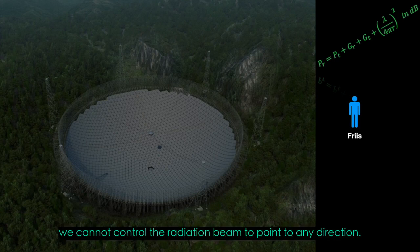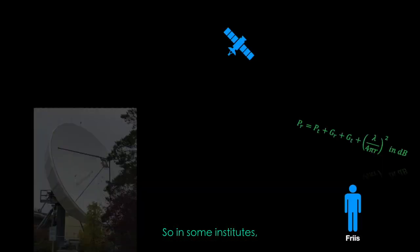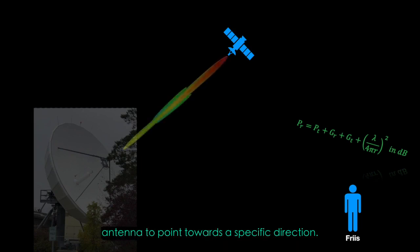What's more, we cannot control the radiation beam to point to any direction. So in some institutes they use bulky and complex mechanical devices to control the parabolic antenna to point towards a specific direction. Here is a large parabolic antenna close to my home which receives signals from satellites, but it is still too bulky and slow.